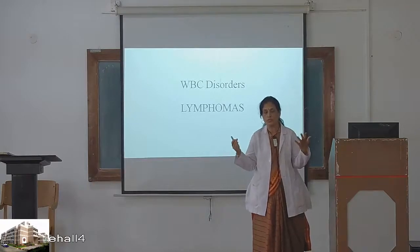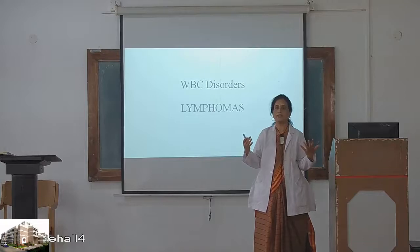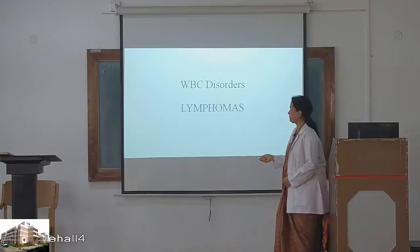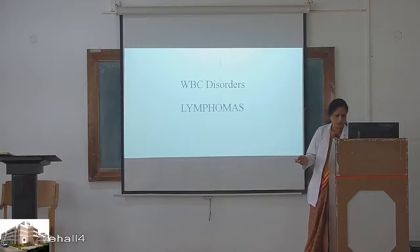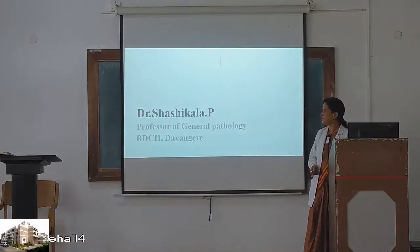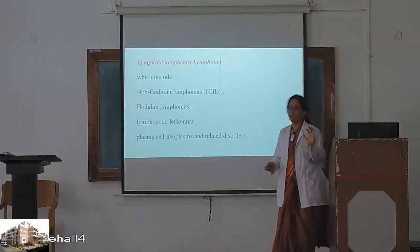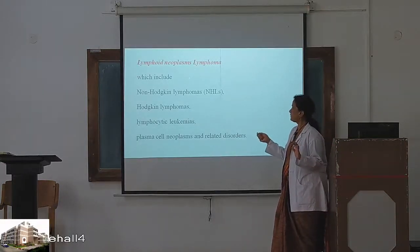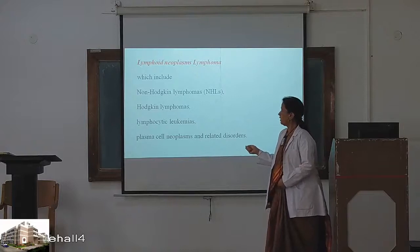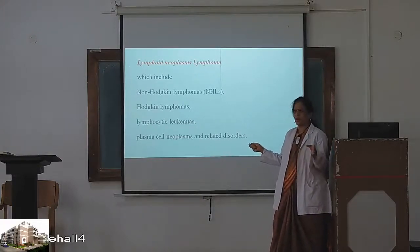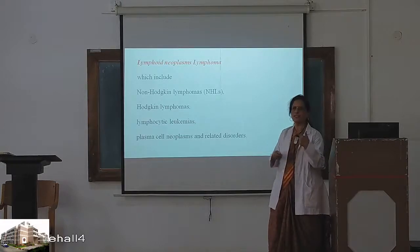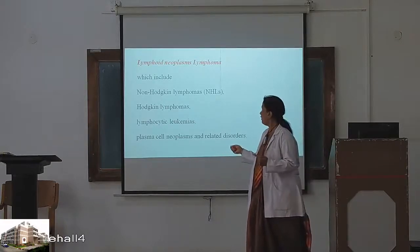Which tissue is mainly affected? It is the lymphocyte, so let us consider it as the lymph node. This is what we are going to learn today, as this could be a short-note topic in exams. Lymphoid neoplasms — we are talking about lymphoid neoplasms and lymphoma. Lymphoma includes two particular types: one is Hodgkin's lymphoma, and the other is non-Hodgkin's lymphoma.